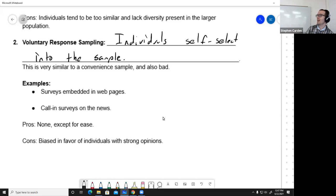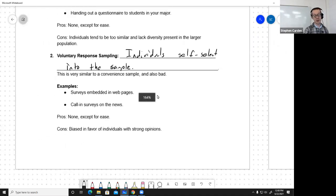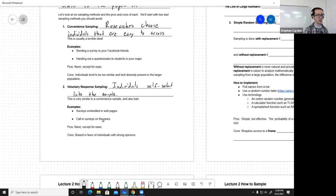What's bad about this? Who's going to take the time to actually answer that web page survey or to call into the news? Probably just getting people with really strong opinions. In particular, you're likely to get people with strong negative opinions. People who feel negatively about something are more likely to take the time to respond to these. So you're going to get results that are biased, usually in a negative direction.